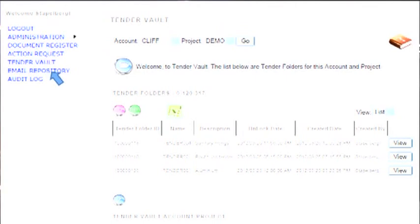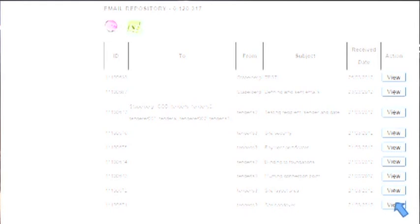And lastly, if I go to the email repository, there are a whole lot of emails. If I click on an email, I can send it to myself or to others. In this particular instance, this email says, site handover will be on the 29th of the 3rd. Email the attachment, and it sends the attachment. And that's the being in the Northland of the eco-system. Thank you.